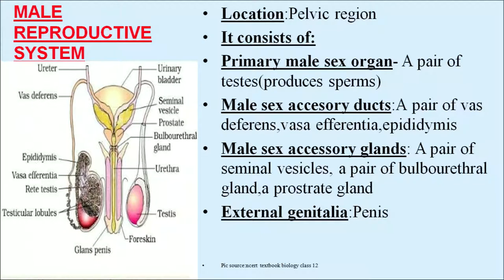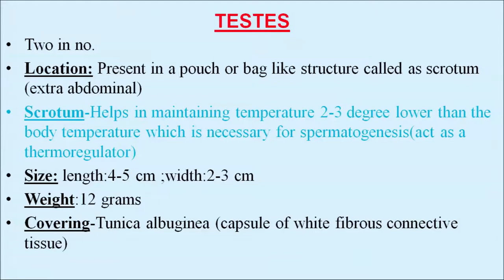The male reproductive system is located in the pelvic region, that is the lower abdominal region. The primary male sex organ consists of a pair of testes which produce sperm. Male sex accessory ducts include a pair of vas deferens, vasa efferentia, and epididymis. Male sex accessory glands include a pair of seminal vesicles, a pair of bulbourethral glands, and a prostate gland. External genitalia is the penis. Testes are two in number, present in a pouch-like structure called the scrotum, which is extra-abdominal.